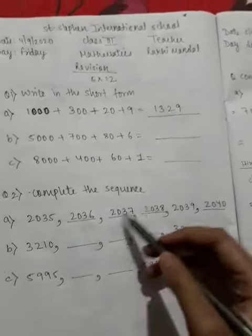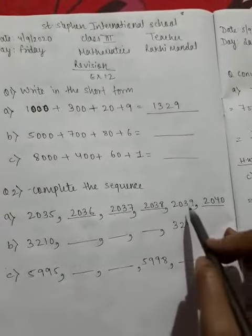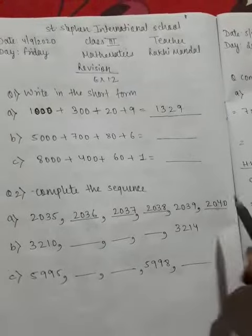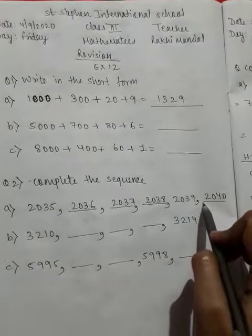2036, 2037, 2038, aur 2039 to diya hai huwa hai, aur 2040.